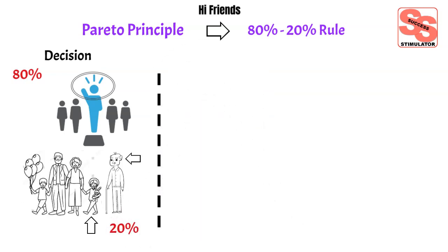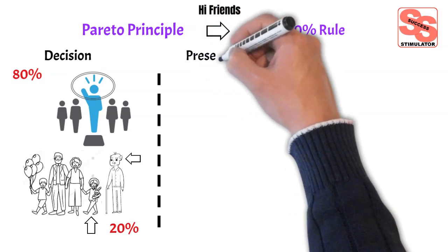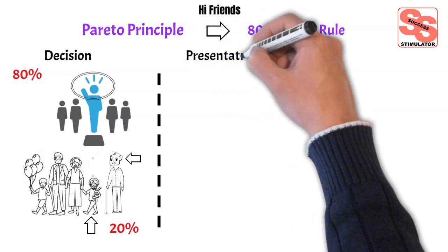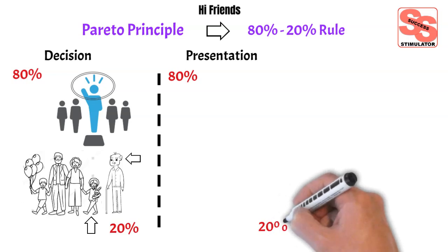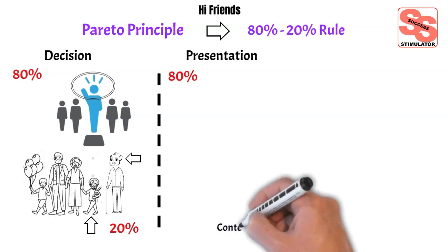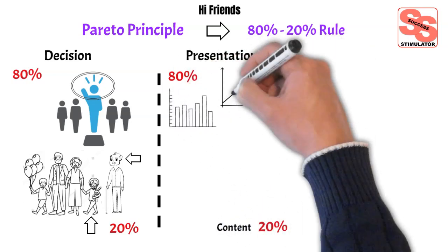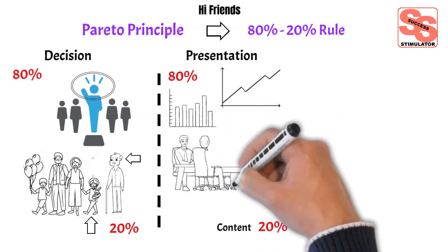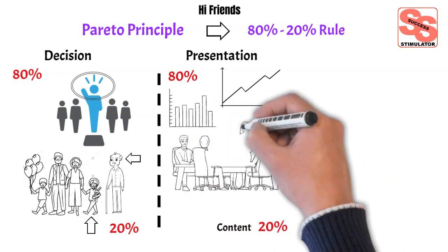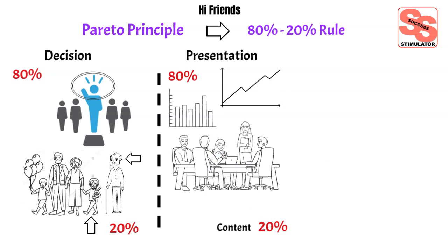We'll see another example. In a public speech or any presentation, 80% of impact is made by 20% of your content. Slides like growth trend and revenue for the year attract most of the people. Those 20% of the content would be a discussion point even after the presentation among the audience.